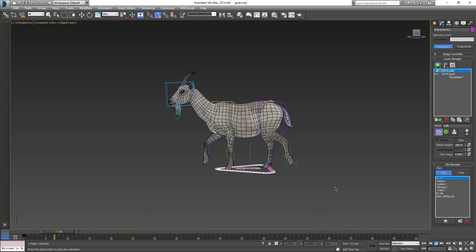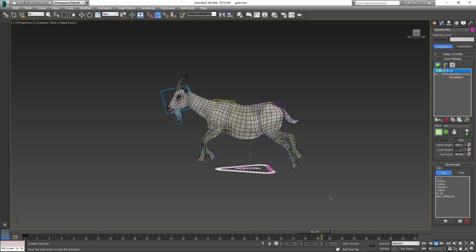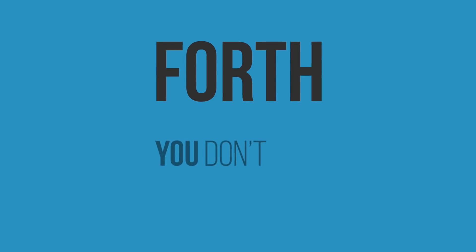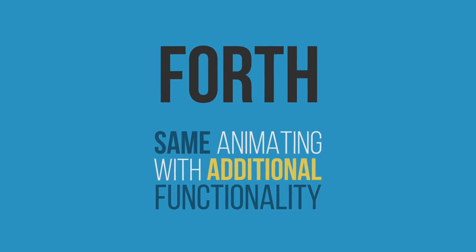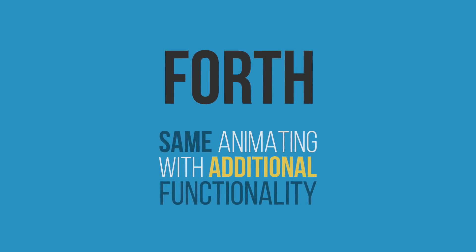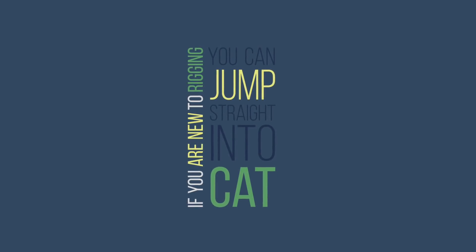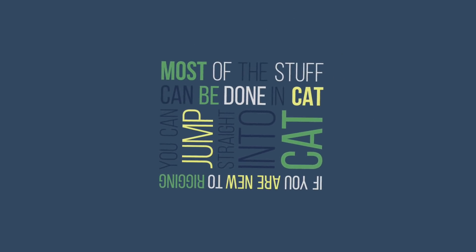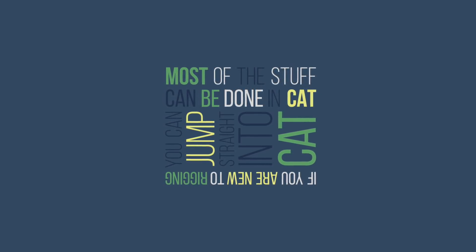And it's not just walks — you can do trot, or run, or basically any cycled movement. Fourth and final thing for this video: by using CAT, you don't actually lose anything, which is arguably the best thing. You still animate just as you would with regular bones or biped or any other system, but you get a lot of new functionality that you wouldn't have otherwise. Just a little advice: if you are interested in CAT and have never done rigging with regular bones or biped, you shouldn't worry. You can jump straight into CAT and skip the others — even absolute beginners — because most of the stuff can be done by CAT alone and you can learn everything with the CAT system.